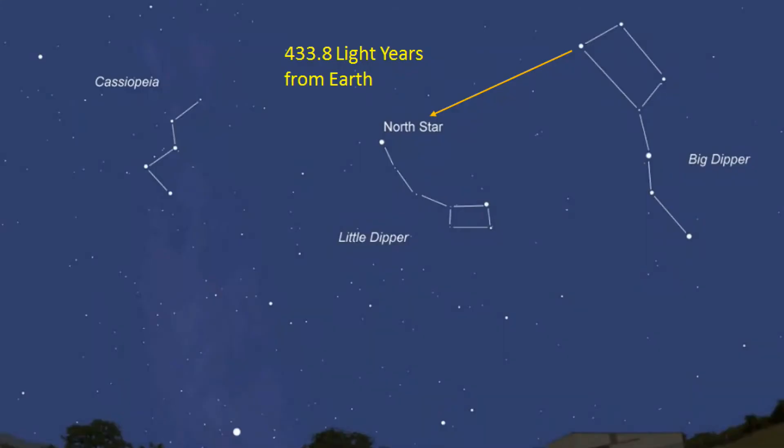Light from the Pole Star takes about 433 years to reach the Earth — that means the Pole Star is about 433 light years away. So if you go out tonight and look at that star, the light falling on your eyes started from the Pole Star 433 years ago and is only now reaching the Earth. That means you are looking at the Pole Star as it was 433 years ago.